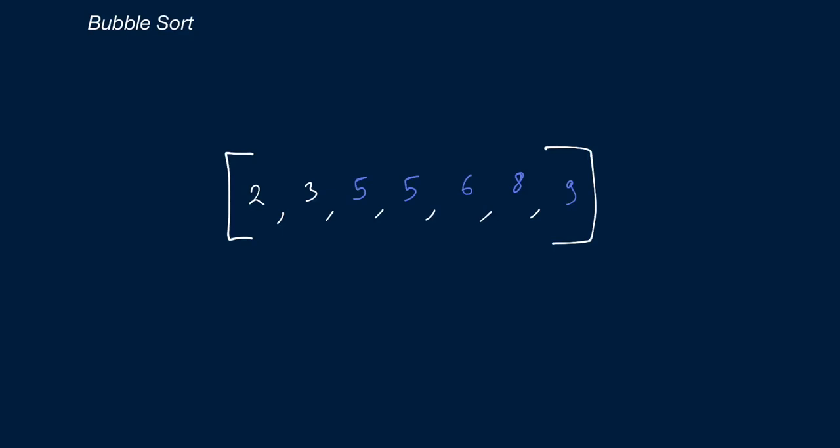Because we did perform a swap, we redo this logic. Start at 2: compare 2 and 3 — they're in the correct order. We move on to 3 and we're done with this loop — no swaps were performed. So we're finally done. If we check the array: 2, 3, 5, 5, 6, 8, 9. Yes, it's sorted. That's bubble sort in action.